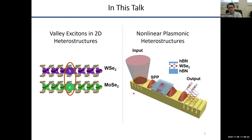To be specific, I'm going to talk about two basic 2D material structures that we study. I'll talk about these interlayer valley excitons in key heterostructures, specifically two different monolayer semiconductors — MoSe2 and WSe2 — stacked on top of each other. I'll also talk about a new direction we've been working on since I got here, combining 2D heterostructures with plasmonic waveguides.